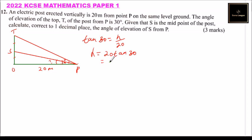So this is equal to, when you multiply that using your calculator, you get it is 11.5, 11.5 meters.